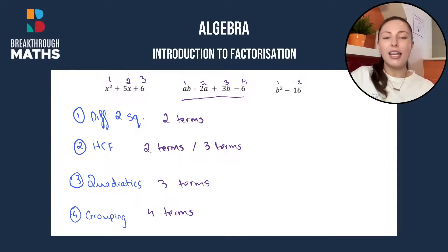So now I'll explain what each of these will look like. As you can see here both difference of two squares and highest common factor can have two terms. So how would we know which one to use? Well you have to check first for the difference of two squares. And what do you have to look out for?